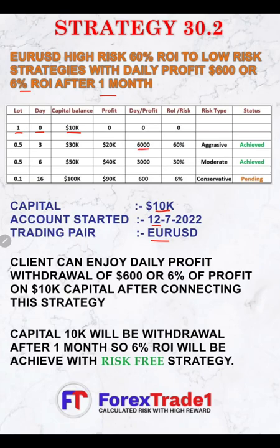With 1.0 lot, the daily profit achieved is $6,000. Six thousand multiplied by three is $18,000 profit, and within three days the $20,000 profit target is achieved — balance reached $30,000. This was with aggressive risk. The risk-reward ratio was 60%, a 1-to-1 ROI. We then reduced the risk by almost 50% and decreased the lot size from 1.0 to 0.5.